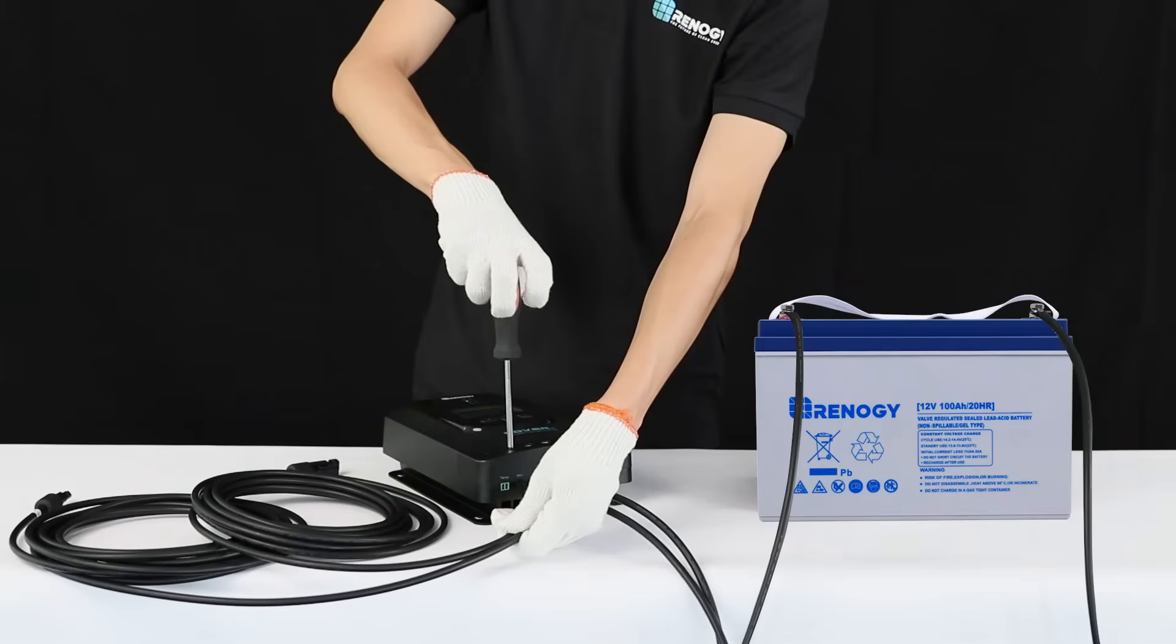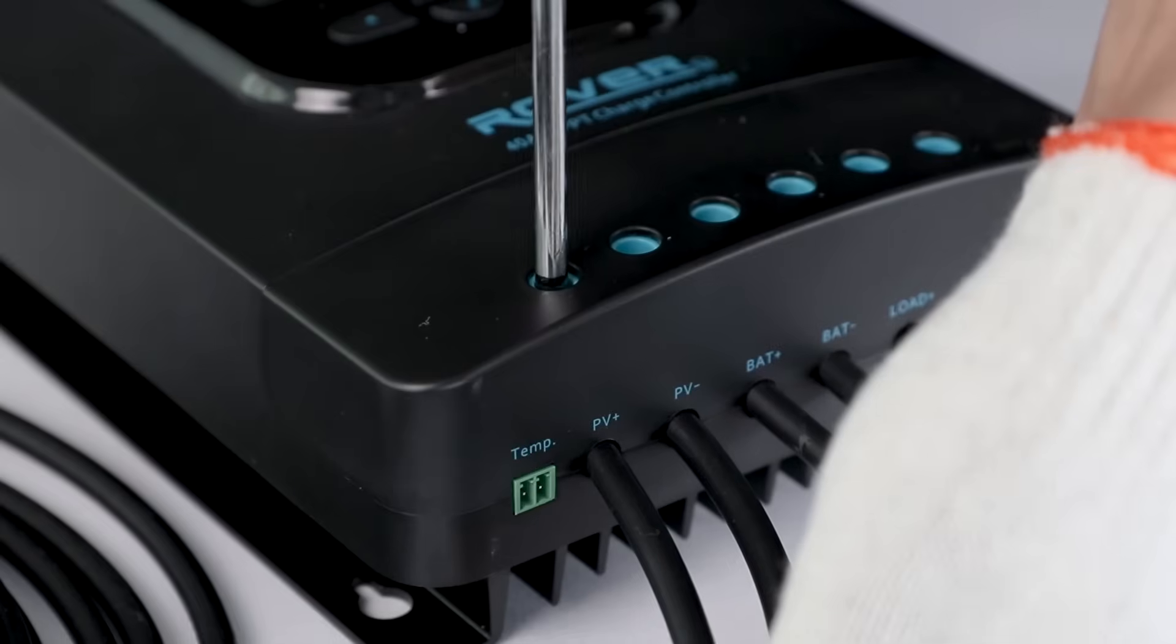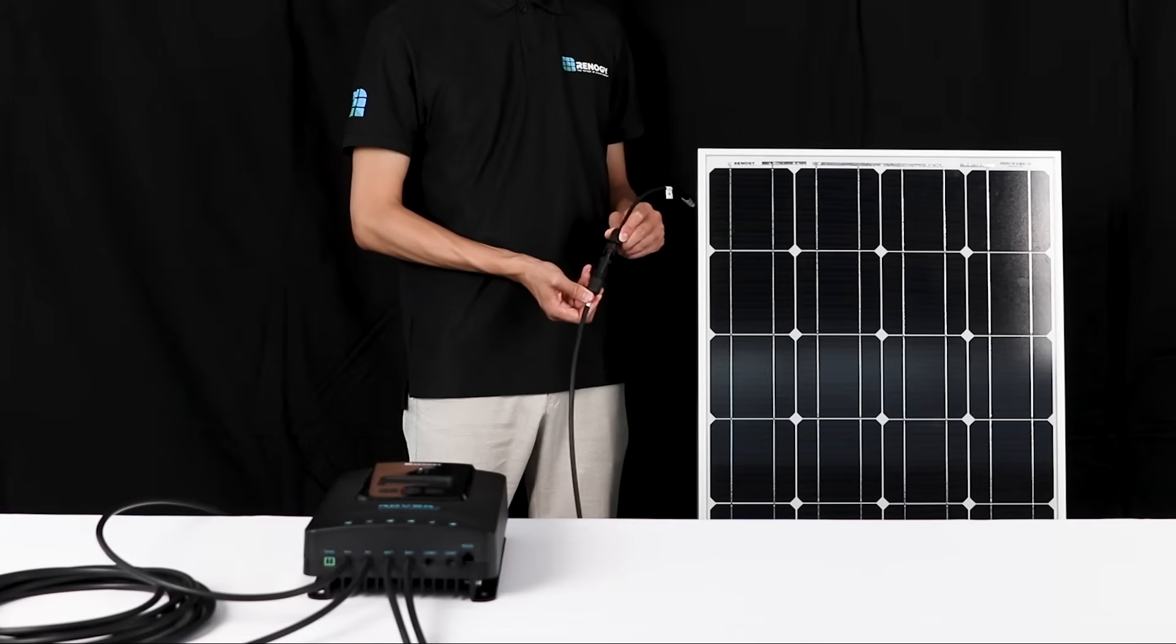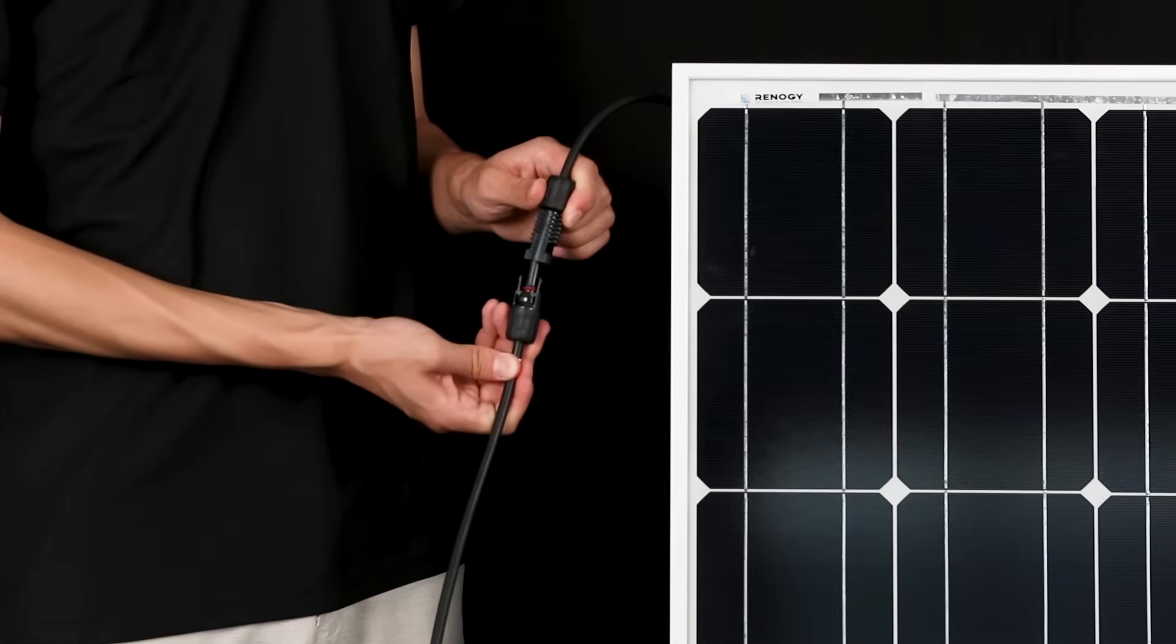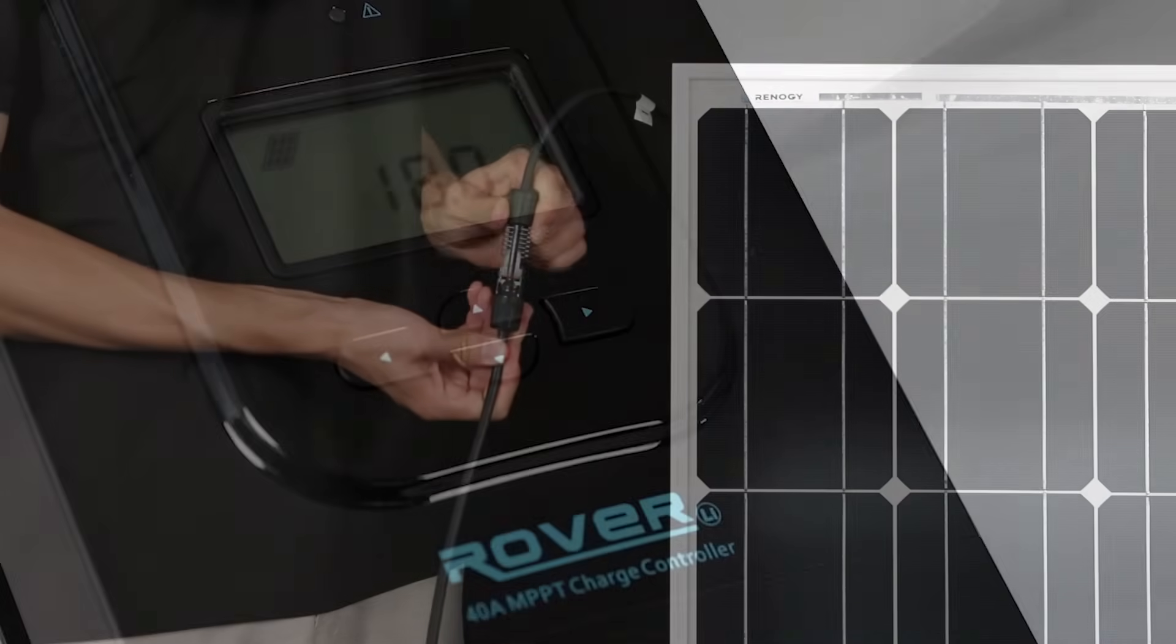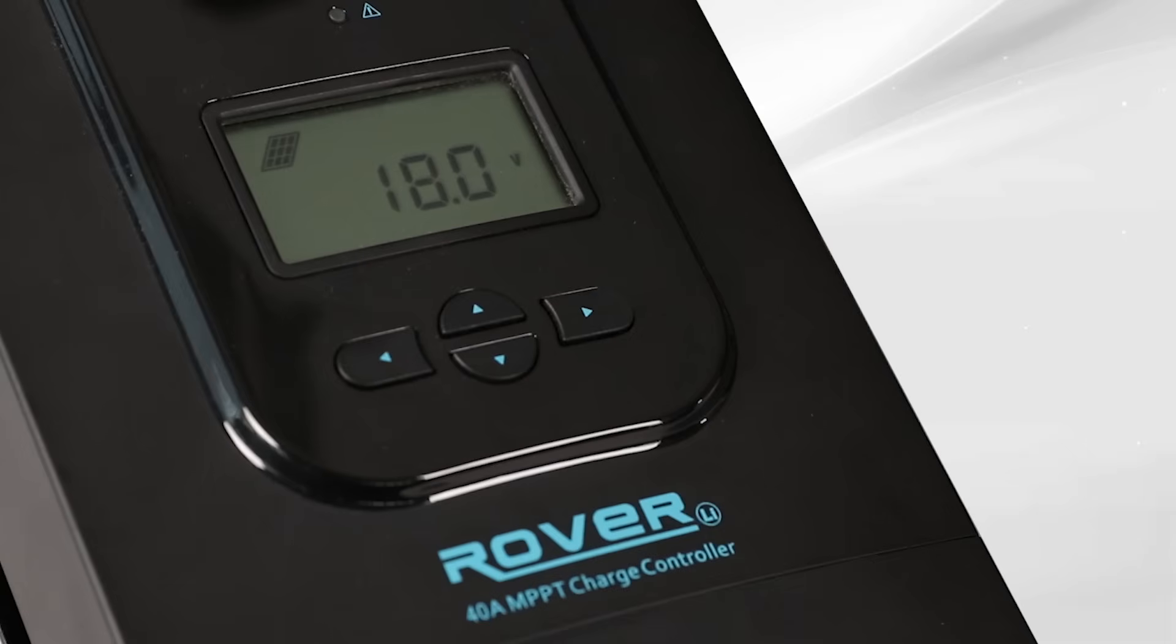The final step is to connect the solar panel. We will use this adapter kit to connect the panel to the Rover. Once the panel is connected, the PV voltage will be shown on the LCD screen.